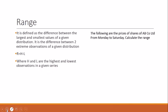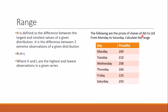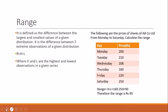Let's look at a problem. The following are the prices of shares of AB Corporation Limited from Monday to Saturday, and we are asked to calculate the range. The values are: Monday 200, Tuesday 210, Wednesday 208, Thursday 160, Friday 220, Saturday 250. Using the formula R = H minus L, the highest value is 250 and the lowest is 160, so the range is 250 minus 160, which equals 90.